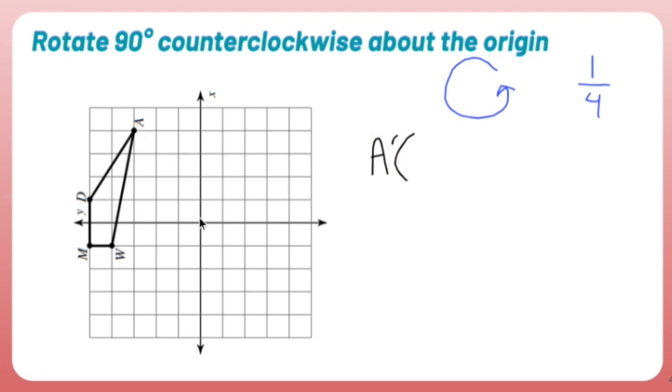In order to get from the origin to A, I go left 1, 2, 3, up 1, 2, 3, 4. So A prime is left 3, up 4, negative 3, positive 4.